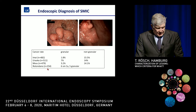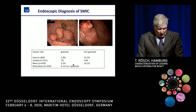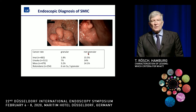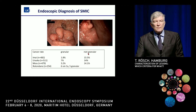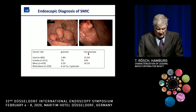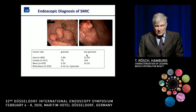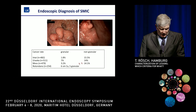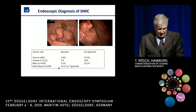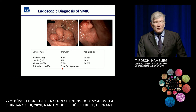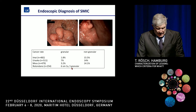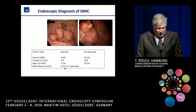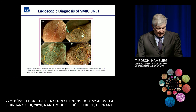Various studies from West and East show that there is a higher risk in the non-granular type — there is also a mixed type to make it more confusing. The risk is not 70 or 80%; it's significantly higher, but around maybe 15 to 20%. And in other studies, there are always a few cancers, and some of them were classified as granular.